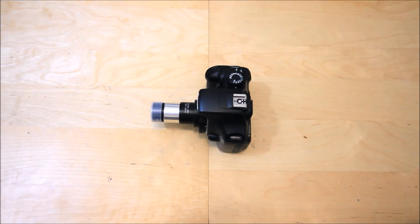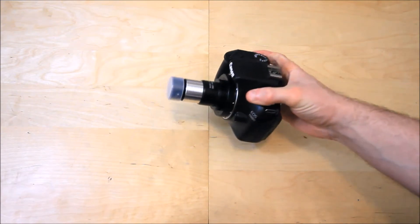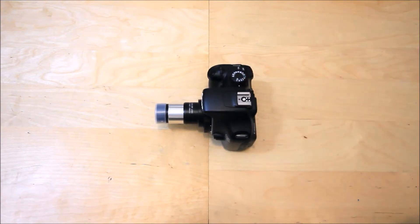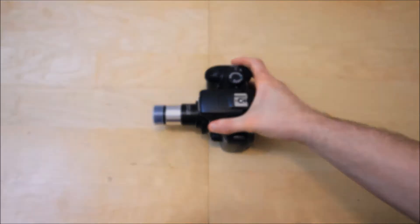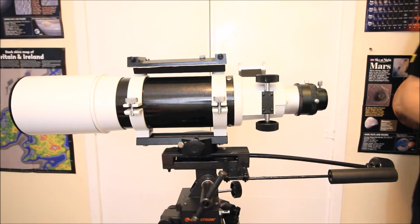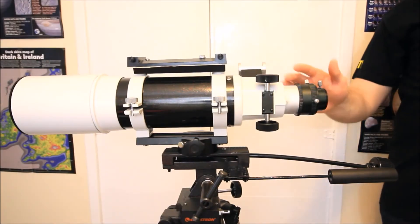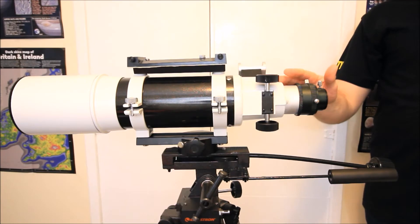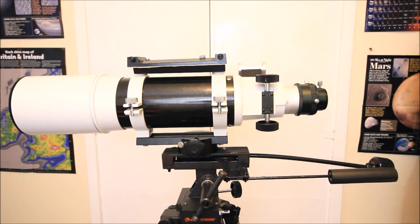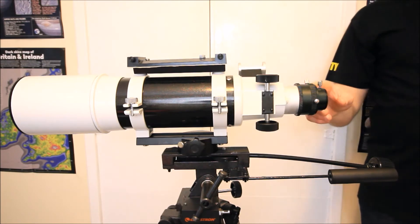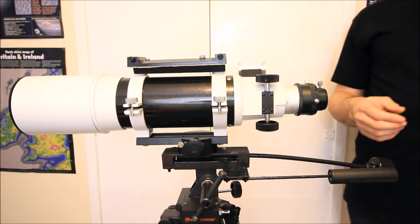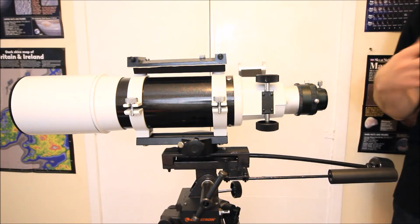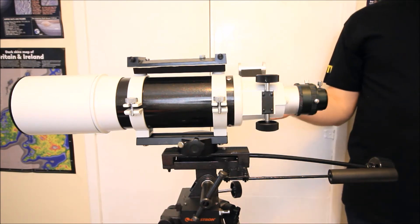What we're going to do now is take a closer look on attaching this setup onto a telescope to use the two times Barlow lens. For example, this is a 102 millimeter refractor. Now the main problem with refractors is if you're going to use a Barlow lens, it really depends on the focal length and the design of the refractor.